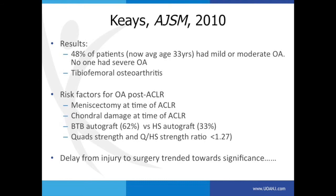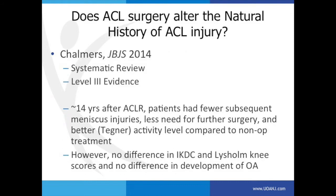If we take the patient's patellar tendon, what are we doing to that quad-hamstring ratio? We're making it worse, putting them at risk for arthritis. Or if we take their hamstrings, we're actually improving that ratio, decreasing their risk of arthritis. Is that the reason? We don't know, but it is interesting. Despite that, many of us would still choose patellar tendon as our favorite graft. A delay from injury to surgery trended towards significance, but not strongly — so not great data there.